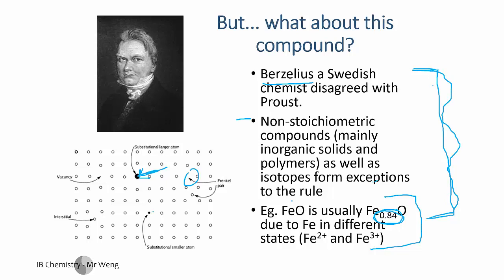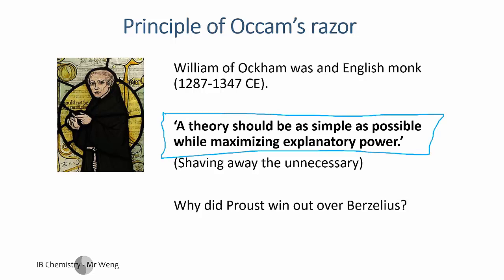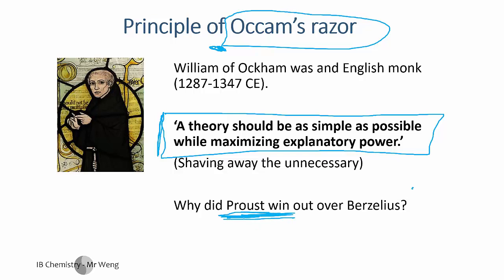Why do we have errors in all of our theories, even laws? Because it doesn't help us to try and be too clever — we can just generalize and keep things simple. This is called Occam's Razor, a specific term that has appeared in test questions. This principle basically says a theory should be as simple as possible while maximizing explanatory power. Proust won the day, and so does everybody else in the scientific community.